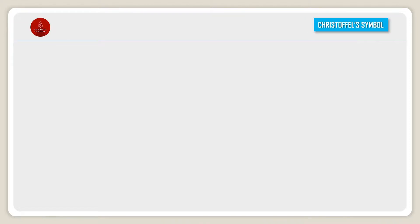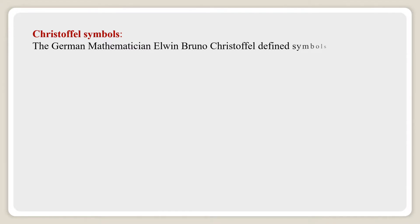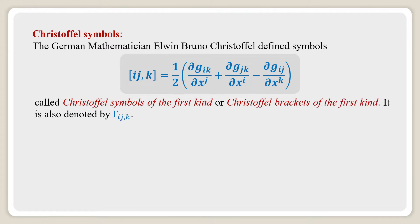Christoffel symbols. The German mathematician Elwin Bruno Christoffel defined symbols within square bracket IJ comma K equal to half of del G IK divided by del X J plus del G JK divided by del X I minus del G IJ divided by del X K, called Christoffel symbols of the first kind or Christoffel brackets of the first kind.